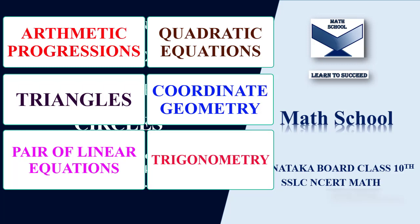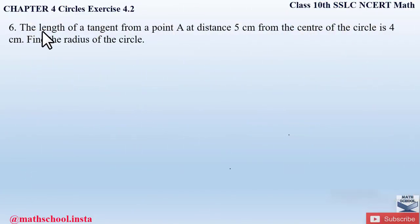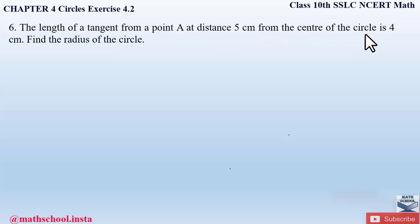Watch the video till the end and if you're new to my channel please subscribe and like the video. Now let us begin. Question number 6 from Exercise 4.2, Chapter 4 – Circles: The length of a tangent from a point A at a distance of 5 centimeters from the center of the circle is 4 centimeters. Find the radius of the circle.